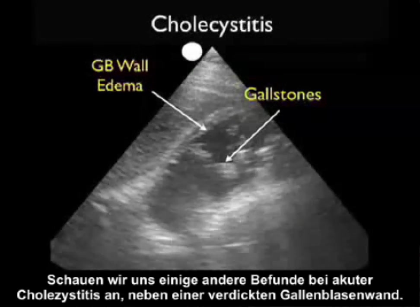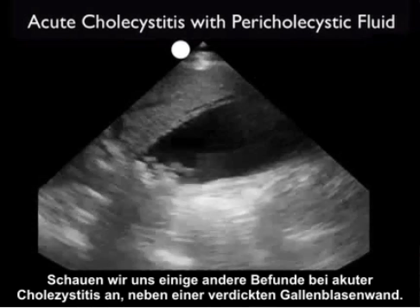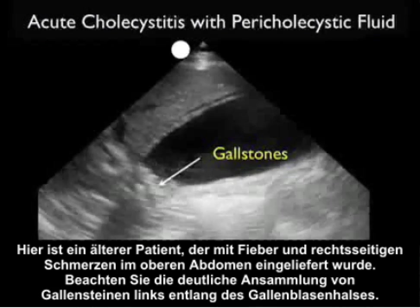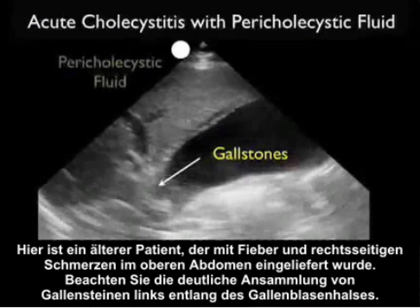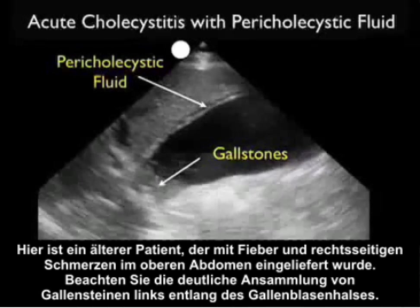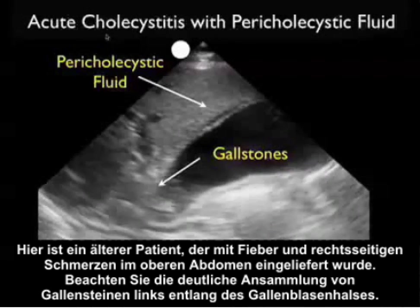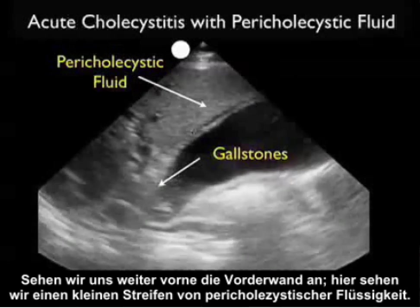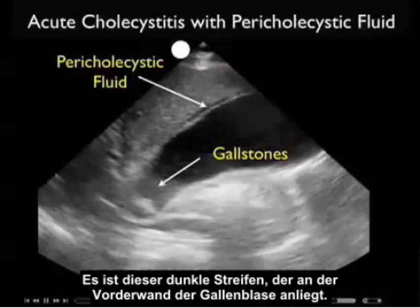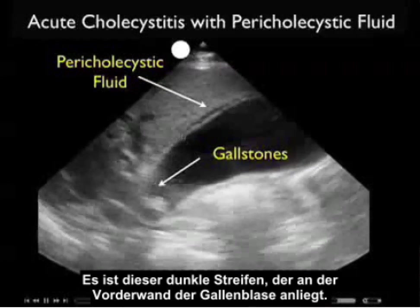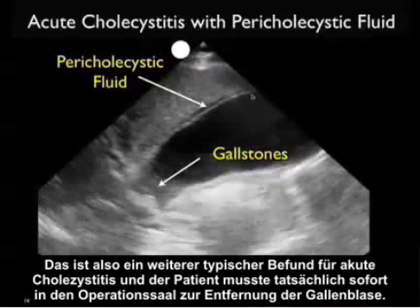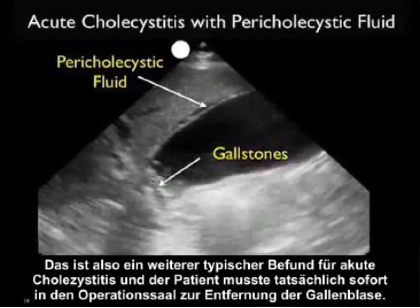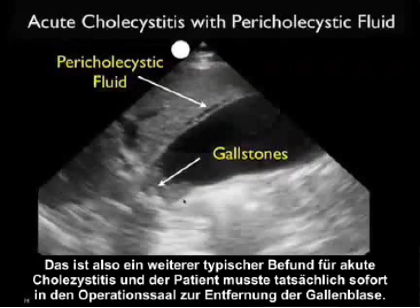Some of the other findings of acute cholecystitis in addition to a thickened gallbladder wall: here's an elderly patient presenting with fever and right upper quadrant pain. Notice the significant burden of gallstones down by the neck of the gallbladder to the left. Looking anterior to that anterior wall, we see a small stripe of pericholecystic fluid — that dark stripe outlining the anterior wall of the gallbladder. Another signature finding in acute cholecystitis. In fact, this patient had to go directly to the operating room for removal of the gallbladder.